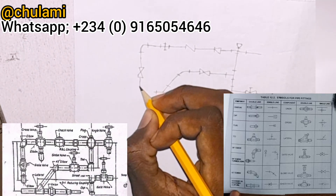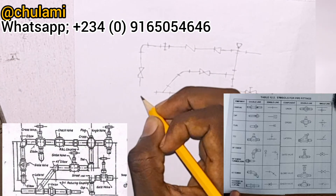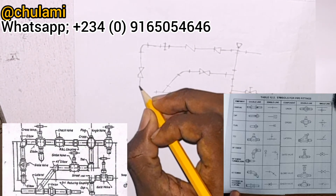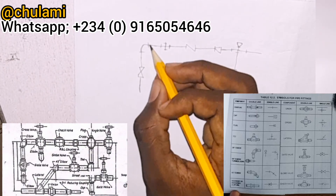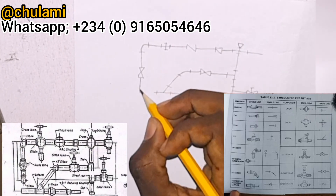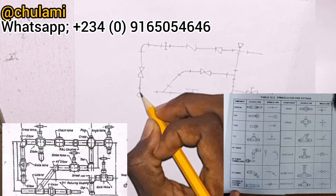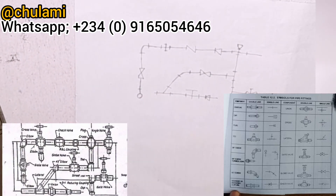And then you have an elbow — a 90-degree elbow as the finishing touch. It's actually oriented like this when the elbow is the finishing touch of the pipeline.